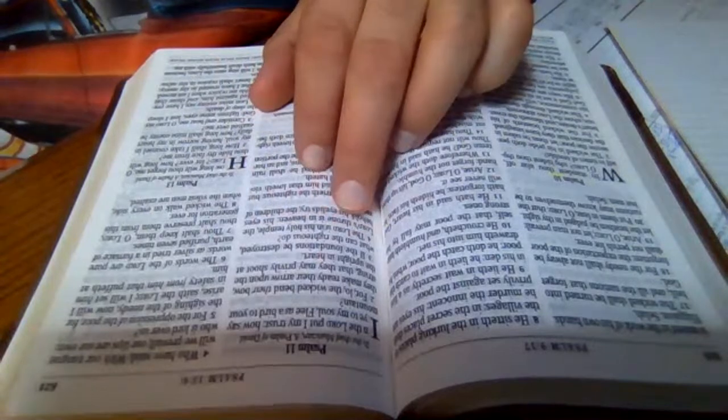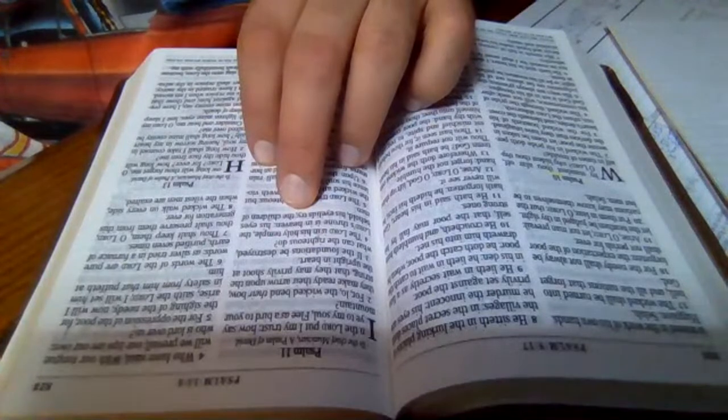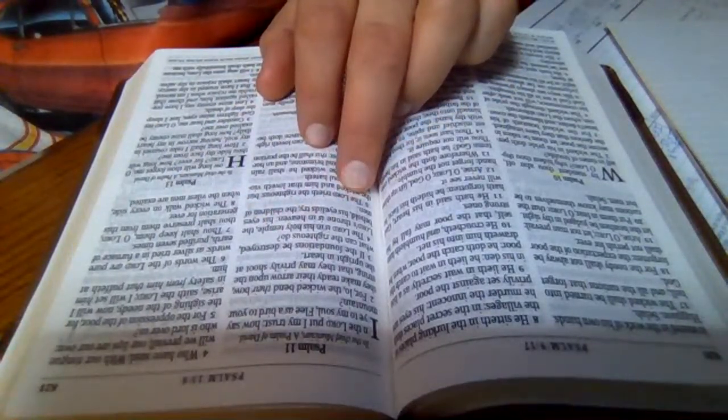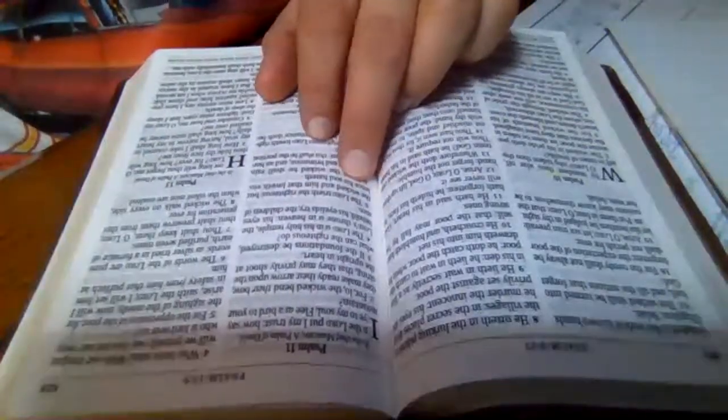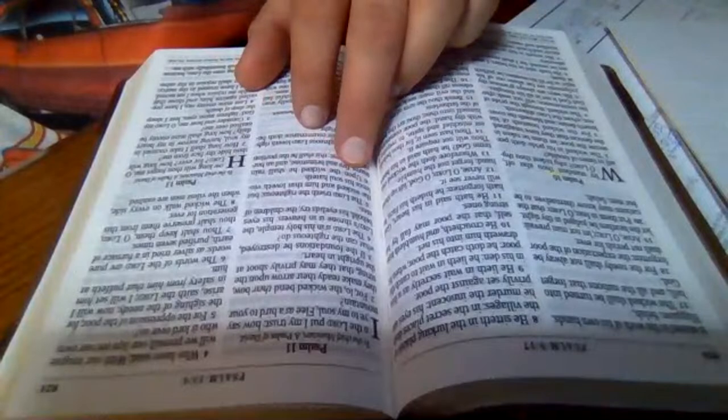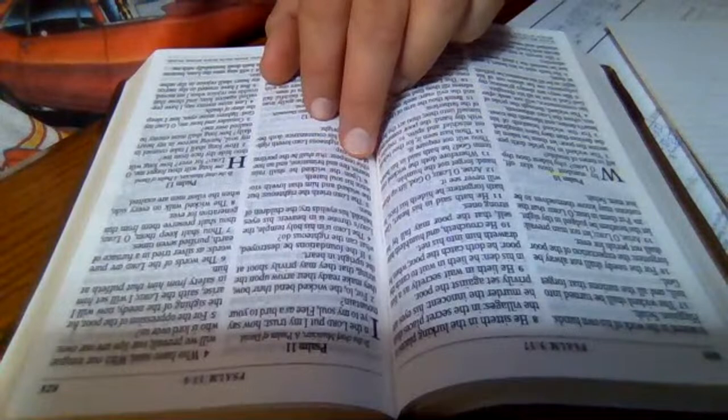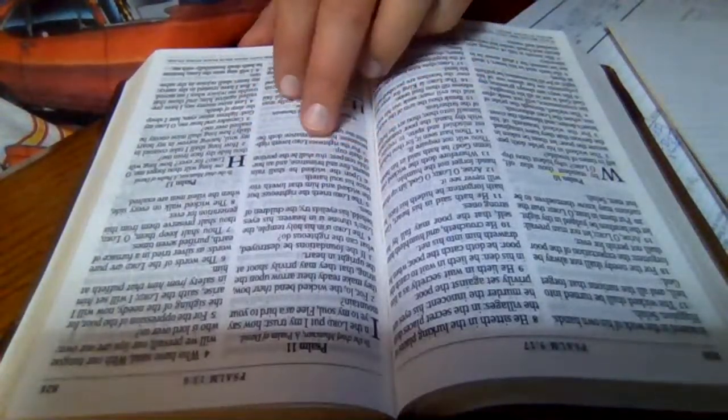The Lord is in his holy temple. The Lord's throne is in heaven. His eyes behold, his eyelids try the children of men. The Lord trieth the righteous, but the wicked and him that loveth violence his soul hateth. Upon the wicked he shall rain snares, fire and brimstone, and an horrible tempest. This shall be the portion of their cup.